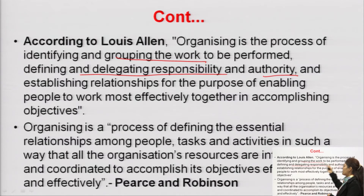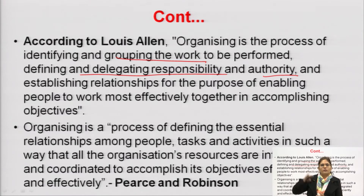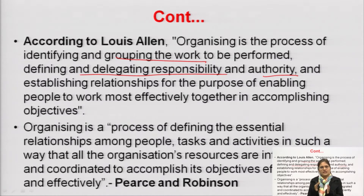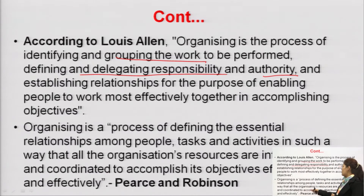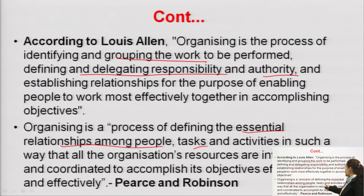After allotting authority and responsibility, the manager must establish formal relationships among employees — which person needs to report to which person, who will be the supervisor and who will be the subordinate. This establishment of formal relationships is also done in the organizing step. The manager defines the formal relationship between employees — who reports to whom.